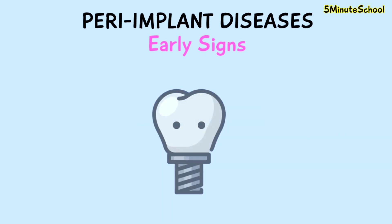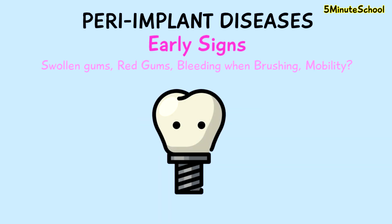If you have implants, some things you need to look out for are redness and swollen gums around your implants. You may also experience bleeding when brushing the area, and you may also experience some mobility around the implants.